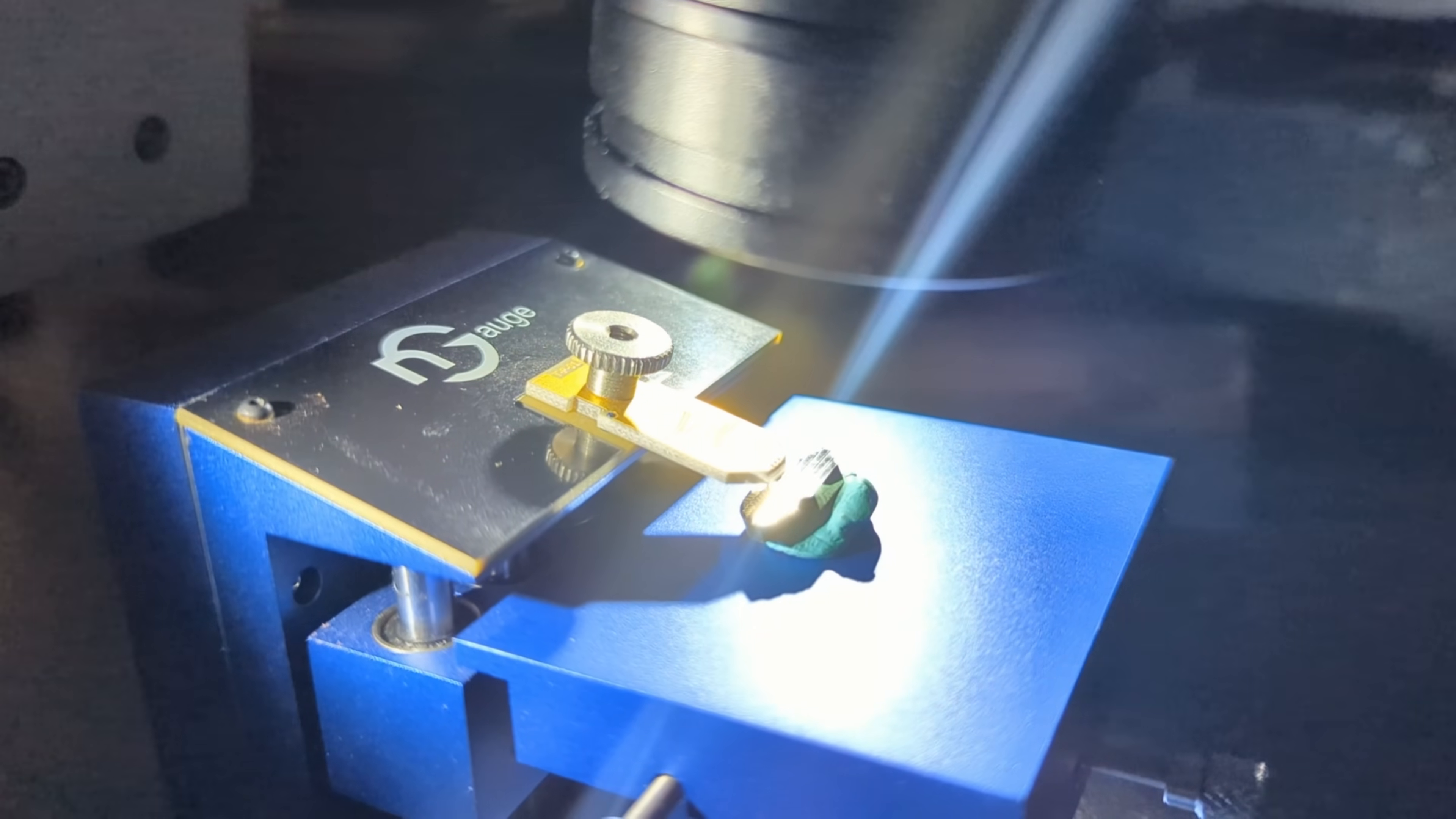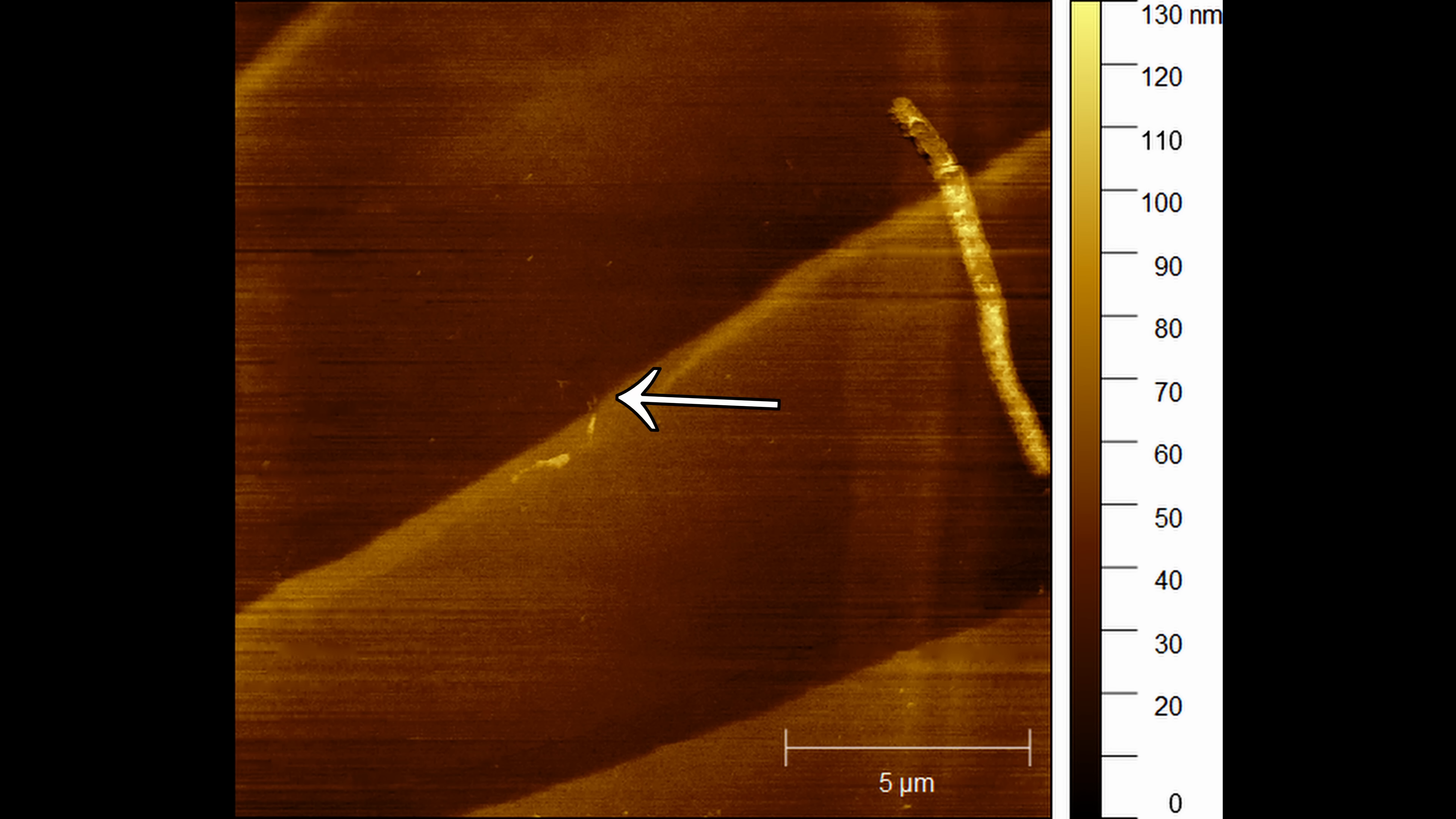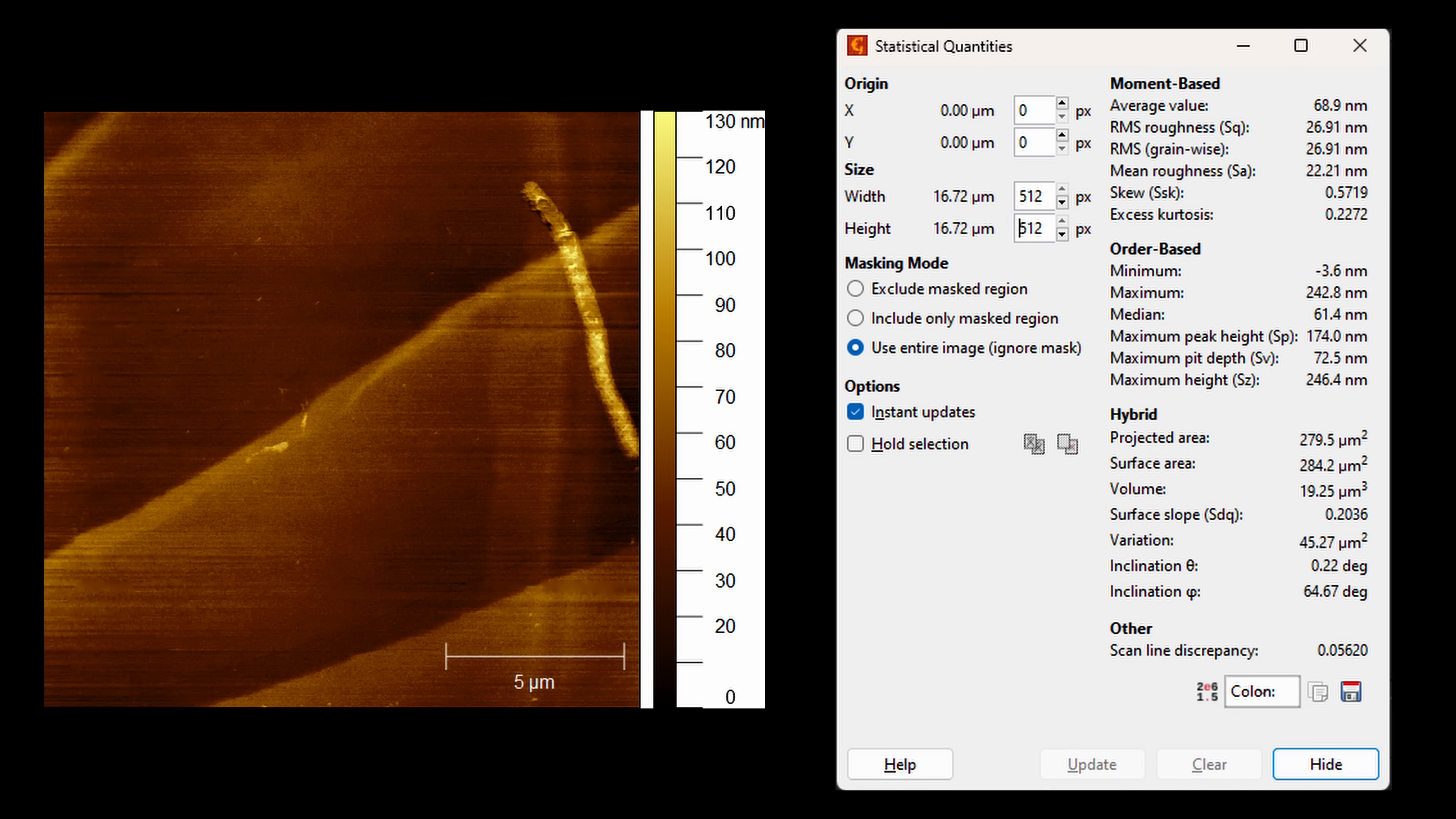But we can get similar data with an atomic force microscope, just over a relatively small area. There's a pretty obvious step between adjacent passes, about 50 nanometers tall. The surface roughness in between the steps is only 3 to 4 nanometers. And global roughness, including the steps, is about 25 to 30 nanometers.